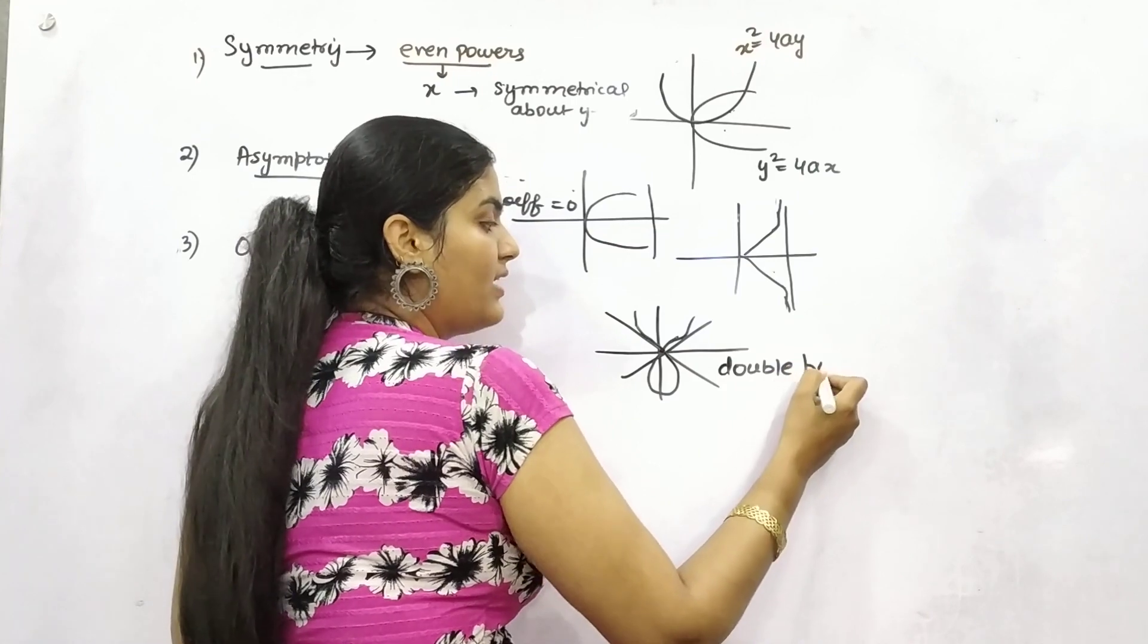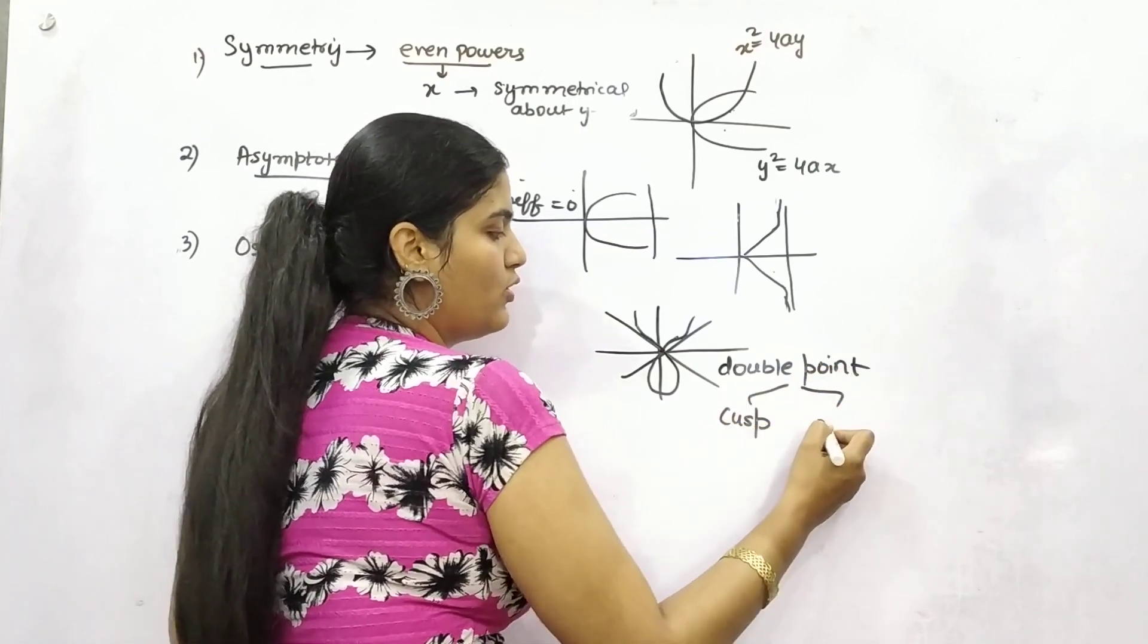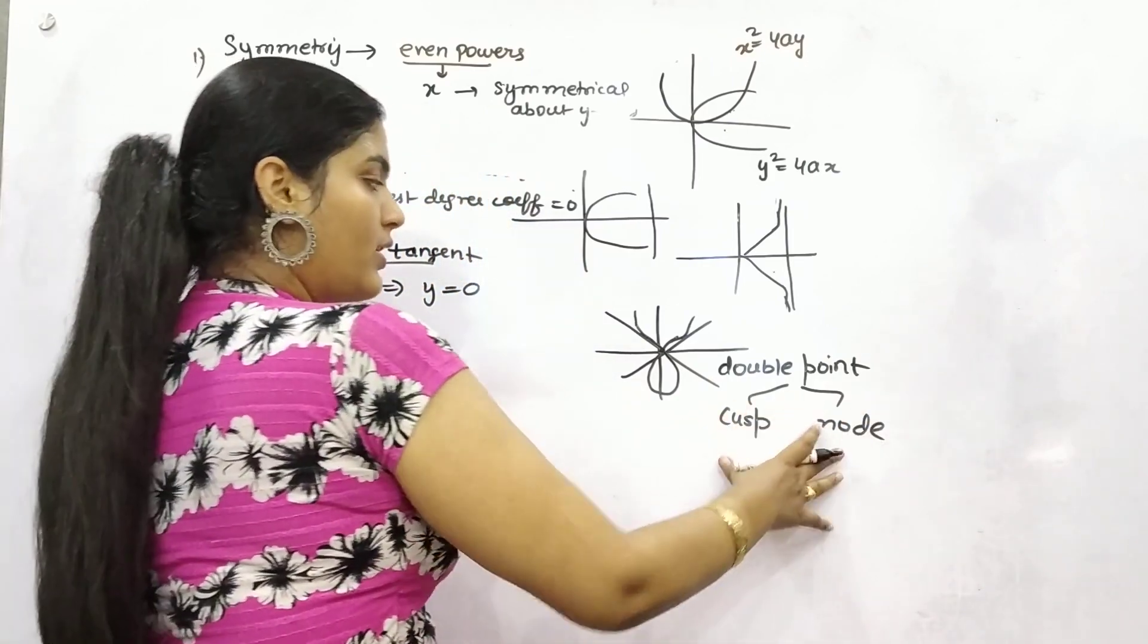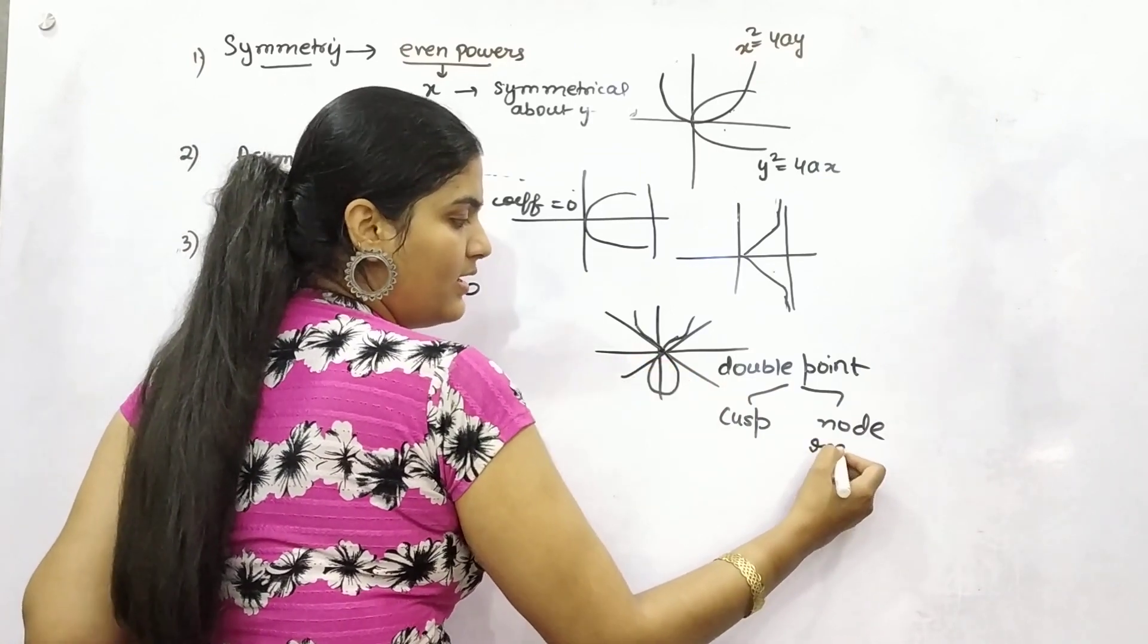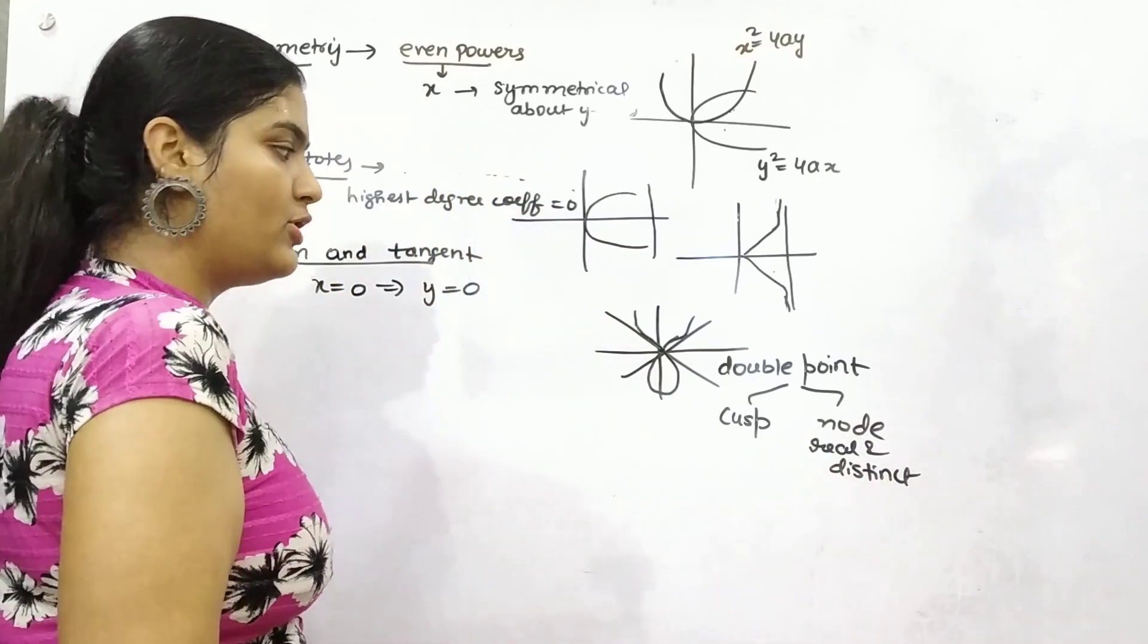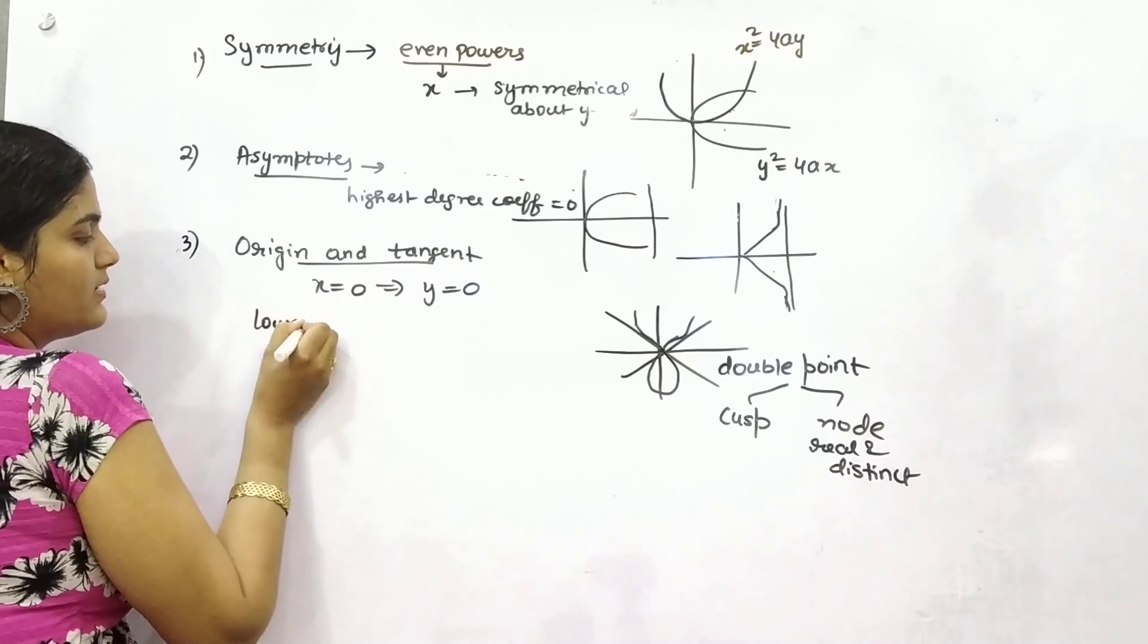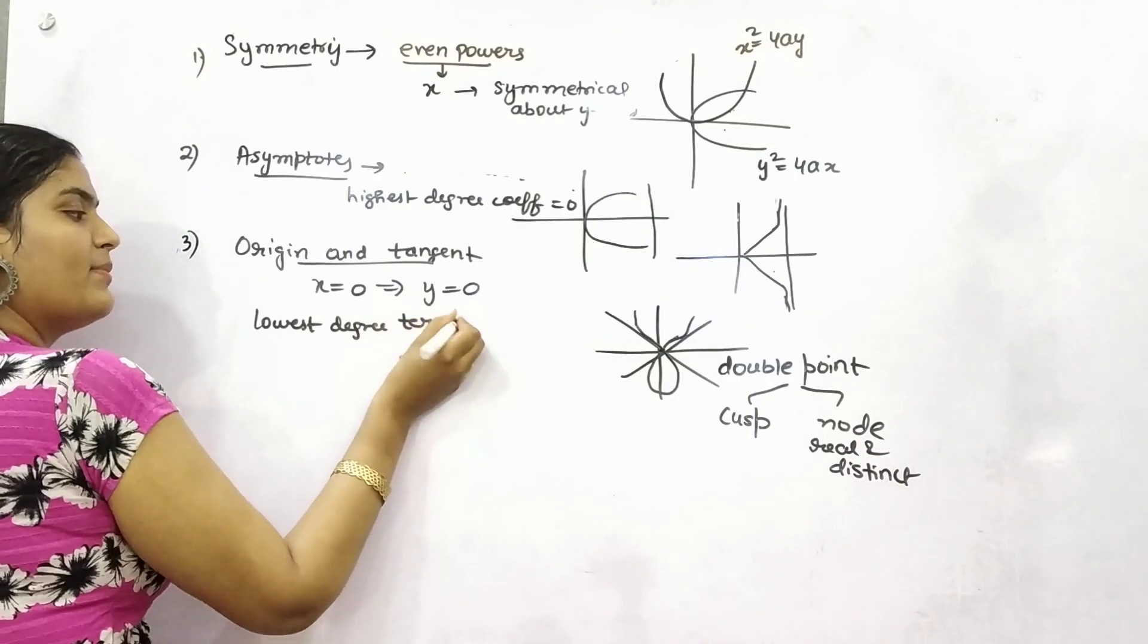That double point is classified into two things: cusp or node. This is node when you will have real but distinct values, different values of your points. How will you find out the points? By taking the lowest degree terms and putting them as 0.